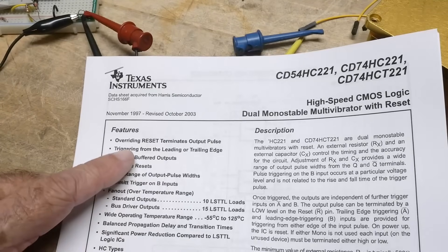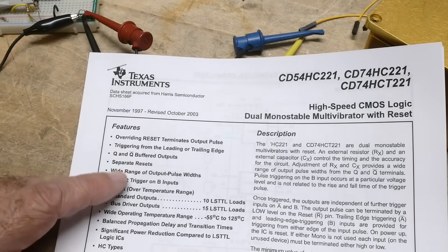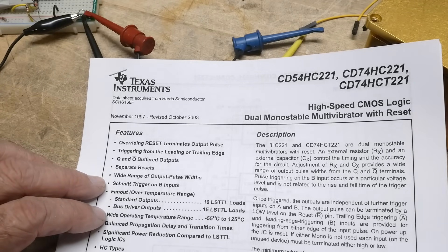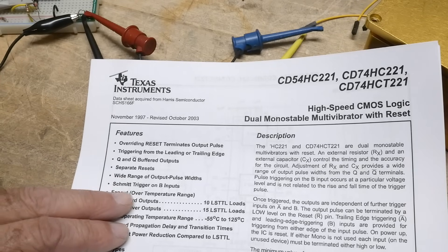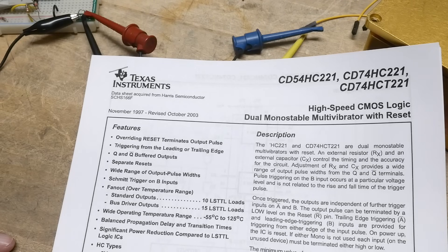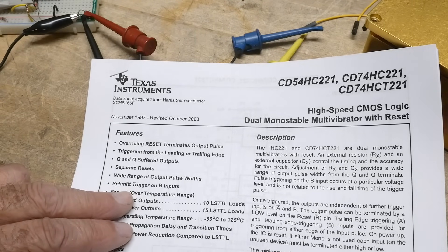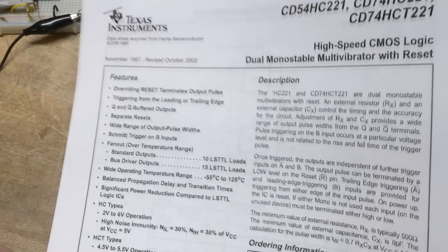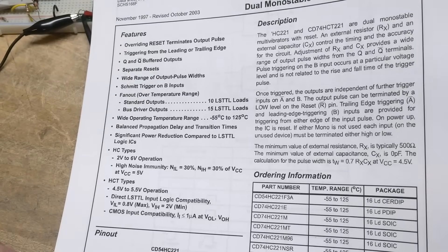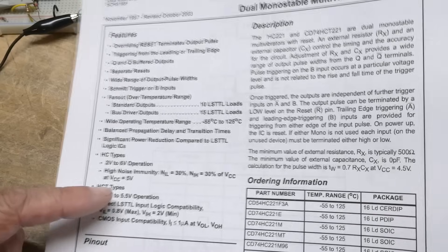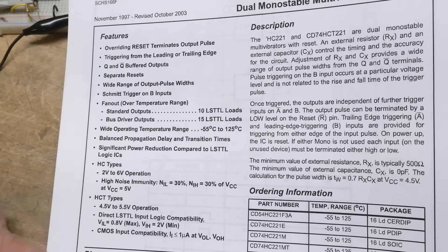Let's see here. Overwriting reset terminate. Yeah, there's a reset pin on it that can shut the whole thing down. You can have Q or not Q outputs, a rising pulse or a falling pulse. Schmitt trigger inputs on B. The HC parts, of course, are CMOS, so they'll operate from 2 to 6 volts.